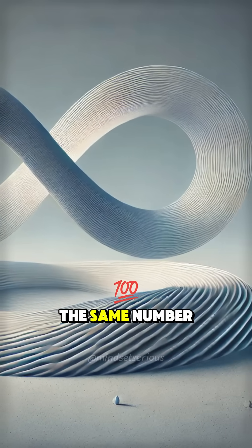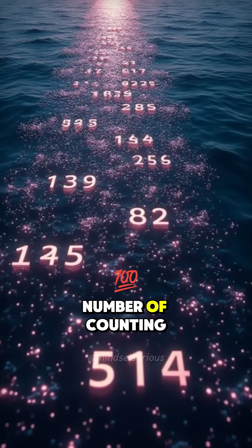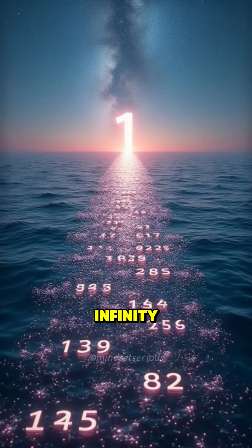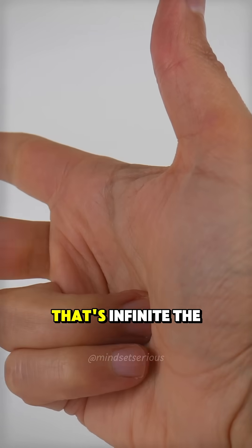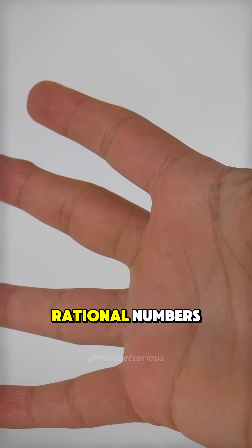Well, it turns out infinity and one and infinity are the same number. For example, the number of counting numbers. So one, two, three up to infinity, the numbers you would use to count things. That's infinite.